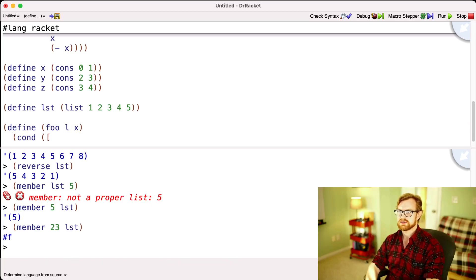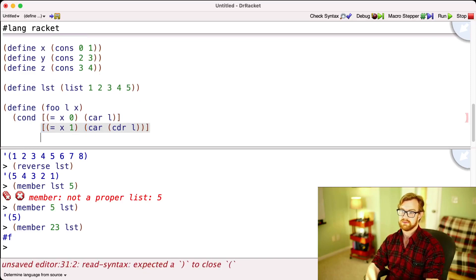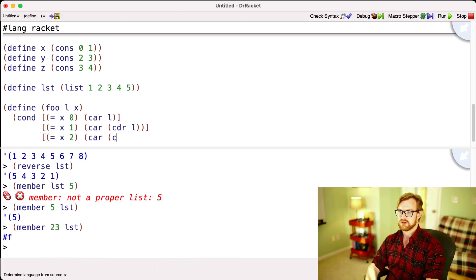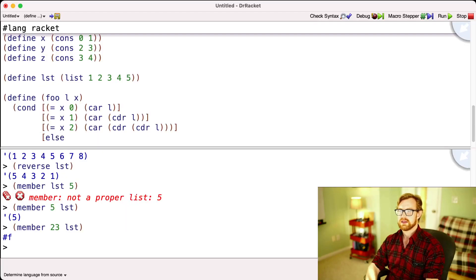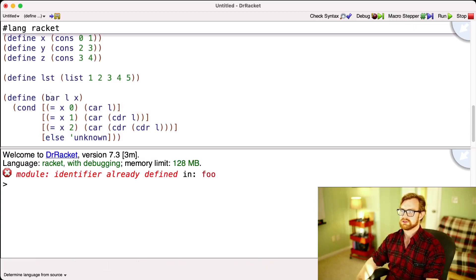So now we're going to say cond. And if x is equal to 0, then we're going to return car of L, since that's the first element of L. If x is equal to 1, we're going to return car of the cdr of L, because we can get the first of the rest of L. Otherwise, if it's equal to 2, we can do the car of the cdr of the cdr of L. And then I can say else return unknown. We'll just call this bar.